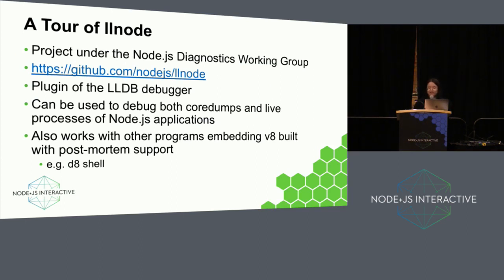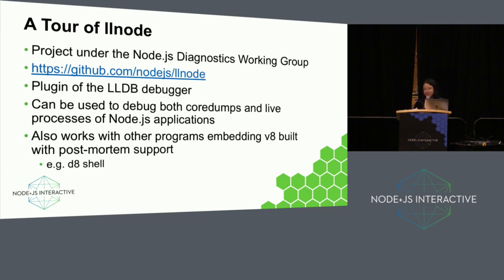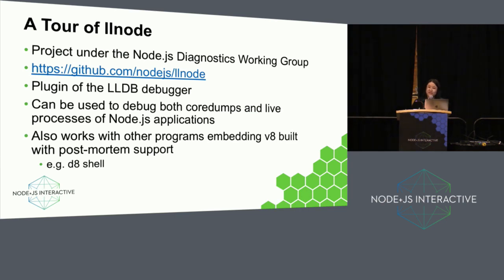Here is our case study. LNode is one of these kinds of plug-ins. It's a plug-in of the LLDB debugger that can be used to look inside the states of the V8 JavaScript engine. It is a project under the Node.js Diagnostics Working Group. It can be used to debug both core dumps and live processes of Node.js applications. Although it's named LNode, it actually works with other programs that embed V8 built with postmortem diagnostic support — for example, it also works with the V8 shell used to run V8 tests.